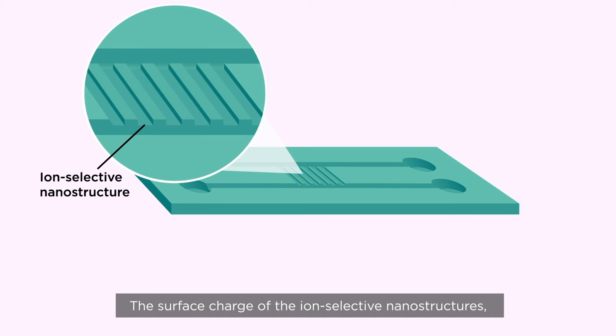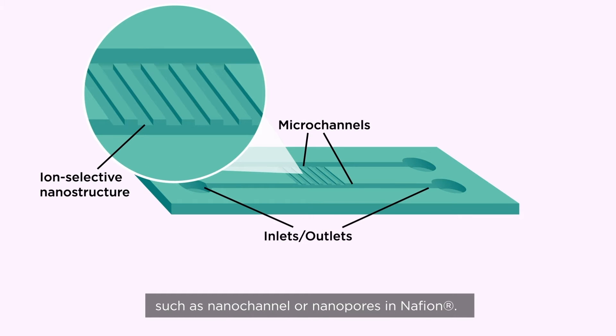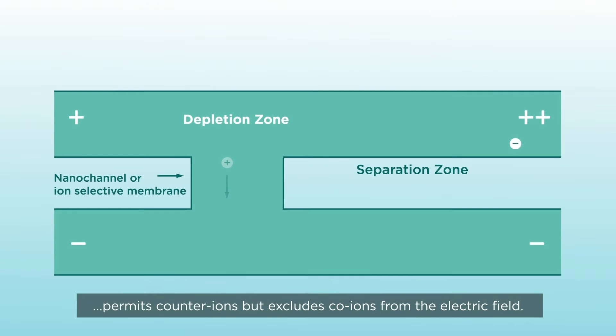The surface charge of the ion-selective nanostructures, such as nano-channel or nanopores in Nafion, permits counter-ions but excludes co-ions from the electric field.